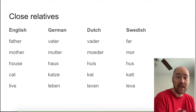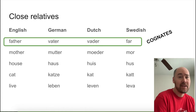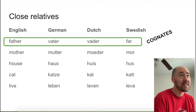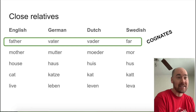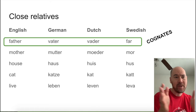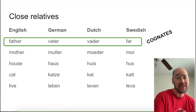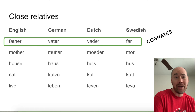We've got English 'father,' German 'Vater' — my pronunciation is not going to be good for most of these — Dutch 'vader,' and Swedish 'far.' We call these cognates. Cognates are words that are similar because they have a relationship; if you go back far enough, they were the same word. As time went on, different groups of people started pronouncing and spelling those words differently, to the point where sometimes it can be hard to see the relationship.